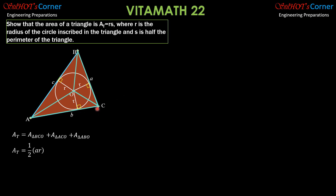Then the area of triangle ACO is one half B times R, and the area of the remaining triangle ABO is one half C times R. R over 2 is common, so let's factor it out: R over 2 times the quantity A plus B plus C.